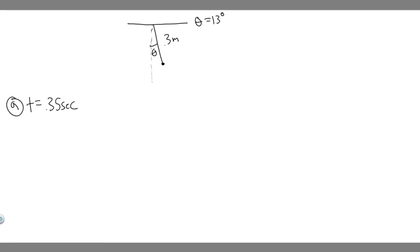In this problem, we're told a simple pendulum is 0.3 meters long. At t equals 0, it is released from rest, starting at an angle of 13 degrees. Ignoring friction, what will the angular position of the pendulum be at: a) t equals 0.35 seconds, b) t equals 3.45 seconds, and c) t equals 6 seconds.